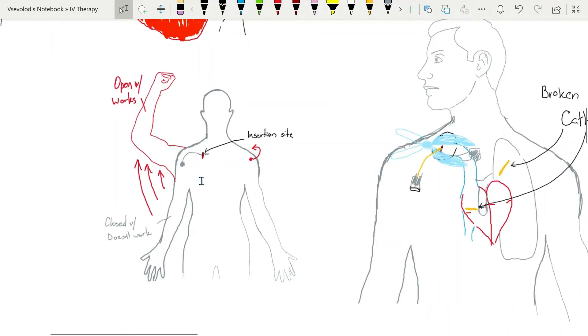Pinchoff syndrome should be suspected when there is a positional change in catheter function with neck and arm movement as the thoracic outlet widens and narrows.